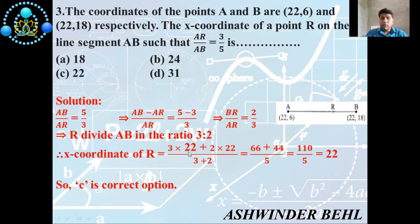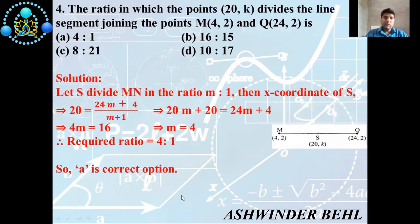Now we find the x-coordinate of R: (3 × 22 + 2 × 12) / (3 + 2). So 3 × 22 = 66 and 2 × 12 = 24... wait, 2 × 22 = 44, so 66 + 44 = 110, divided by 5 gives 22. So option C is the correct answer.